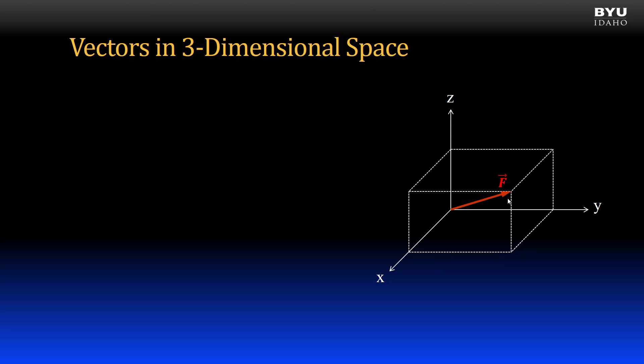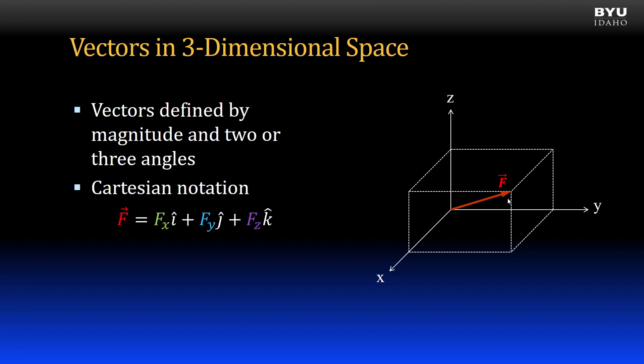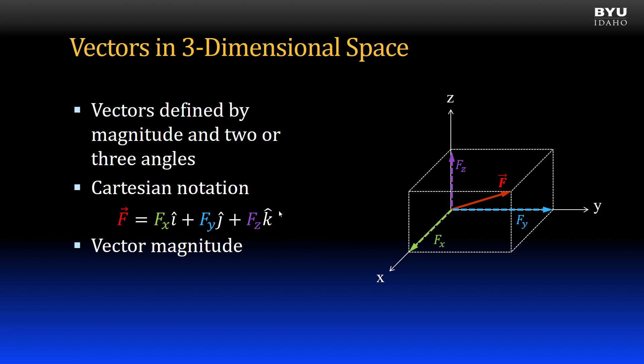Like two-dimensional vectors, three-dimensional vectors can be defined by the vector magnitude and direction. In 3D space, the direction is defined by at least two angles. The vector can also be represented using Cartesian notation, which now has three terms: x-direction, y-direction, and z-direction, as denoted by the k-circumflex or caret — the little hat on top. Vector magnitude is found with the Pythagorean theorem, which can be expanded into 3D space. This equation is very useful for finding vector magnitude when you know the vector's three components.